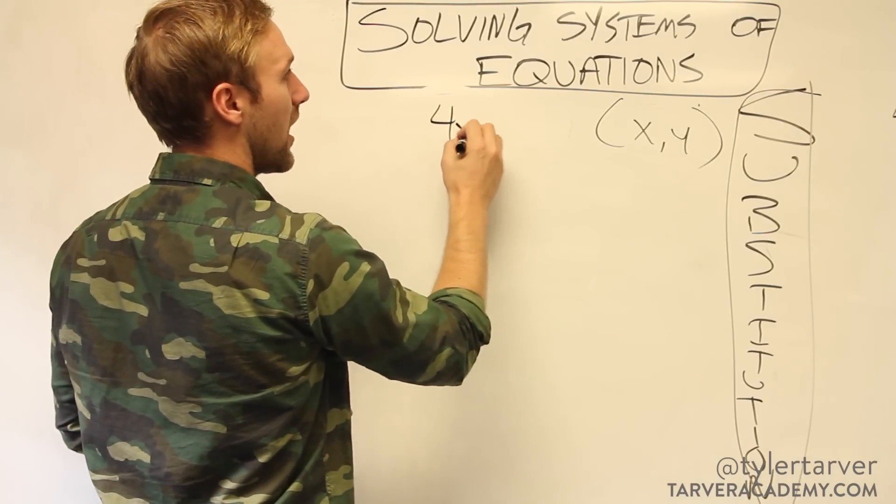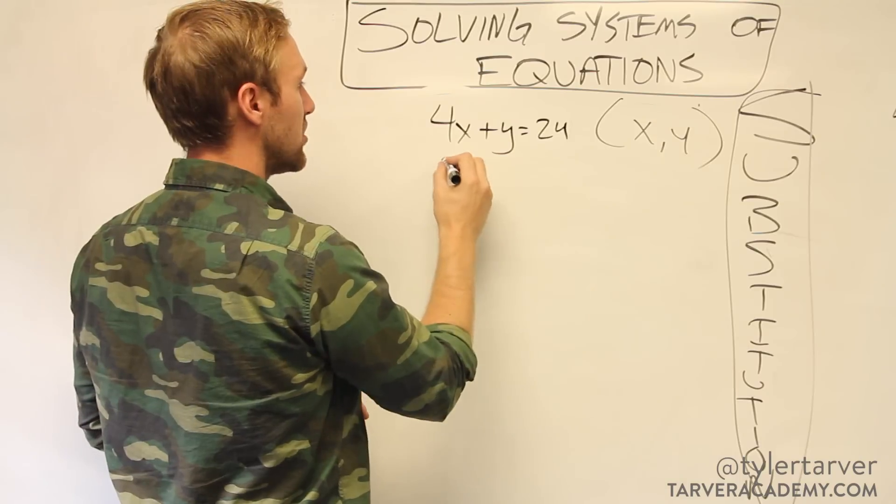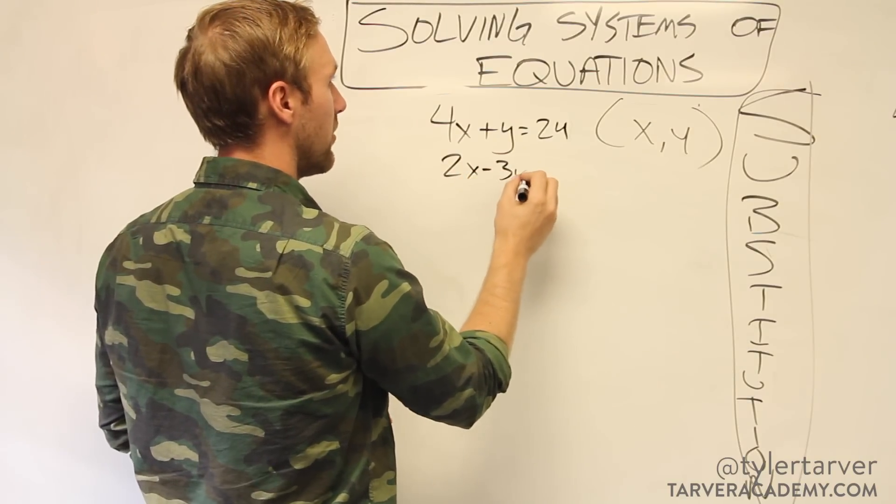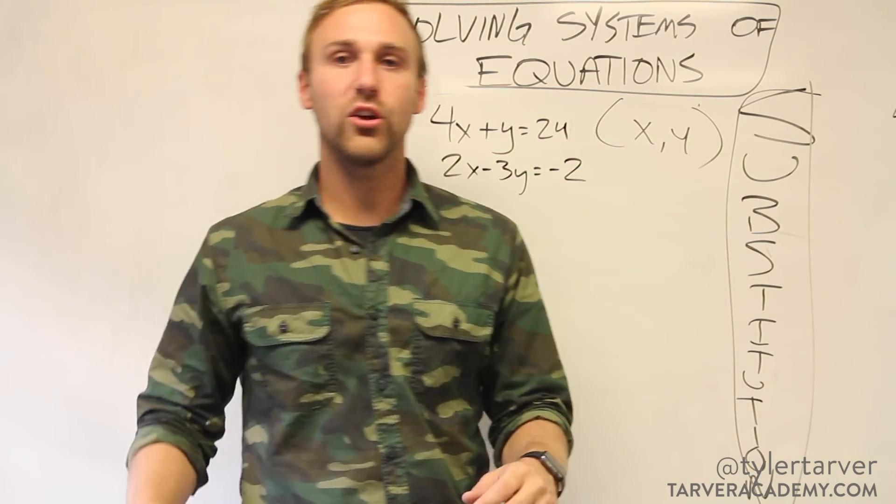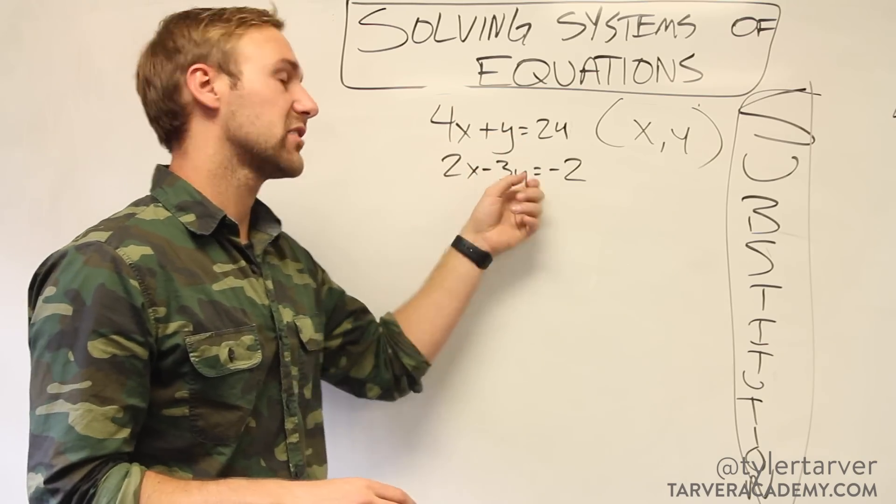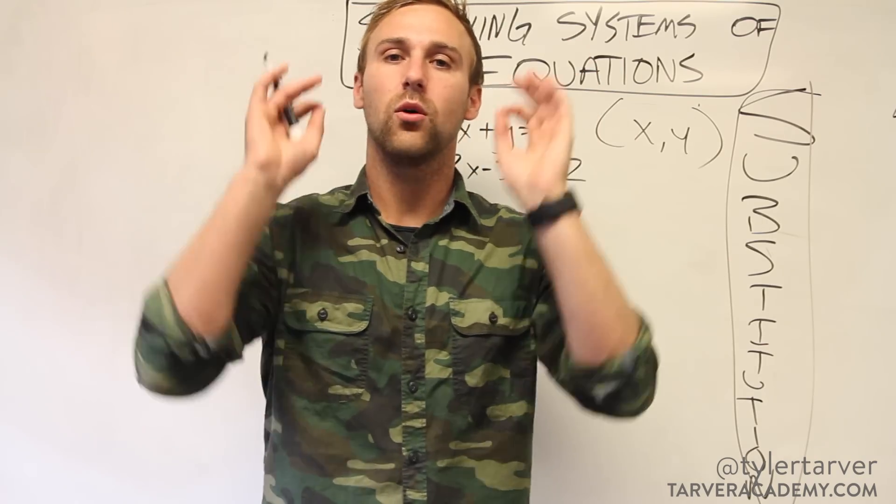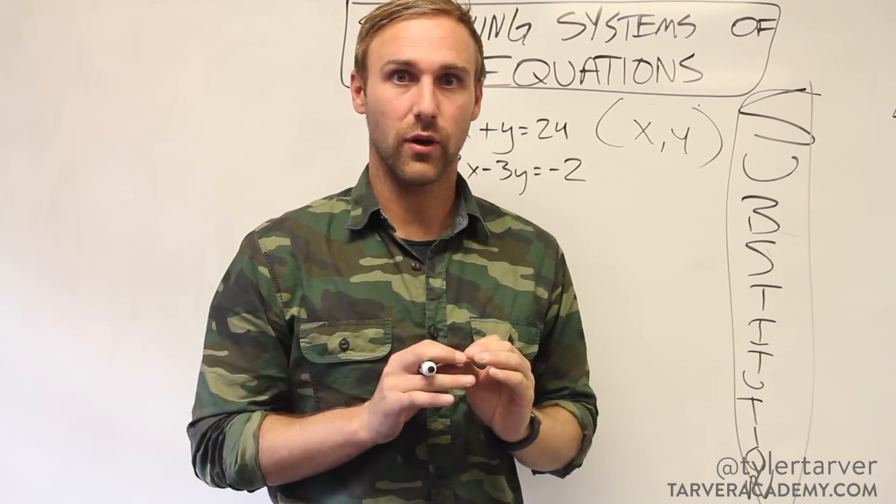For instance, let's look at 4x plus y equals 24. And then 2x minus 3y equals negative 2. What I want to do is I want to get one of my variables, either this x or that y or this x or that y. I don't care which one. I want to get one of them by itself. That is my ultimate goal.